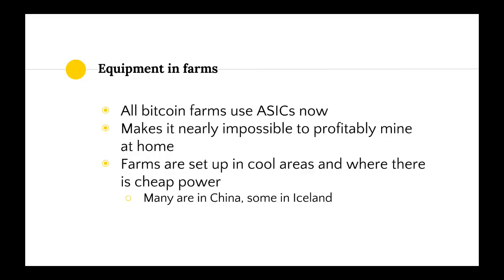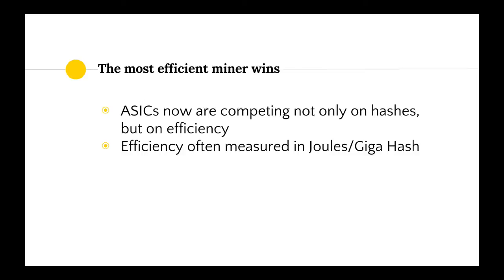It's not profitable to mine at home because your power costs are higher than your expected reward. Bitcoin farms are typically set up in cool areas with cheap power — many are in China because of cheap power, and others are in Iceland or the Arctic Circle area, because it's expensive to cool computers that heat up while processing. When it's colder outside, you don't need to spend as much on cooling. The most efficient miner wins: ASICs compete not only on speed but on efficiency, measured in joules per gigahash.